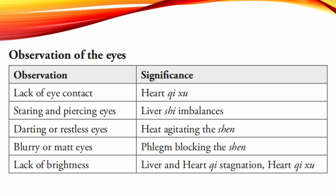To summarize: when one avoids eye contact, it could mean heart qi deficiency; staring and piercing eyes would mean liver excess imbalances; darting or restless eyes indicate heat agitating the shen; blurry or matte eyes indicate phlegm blocking the shen; and lack of brightness indicates liver and heart qi stagnation or heart qi deficiency.